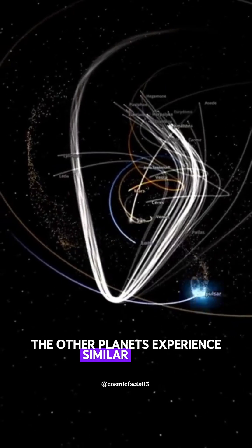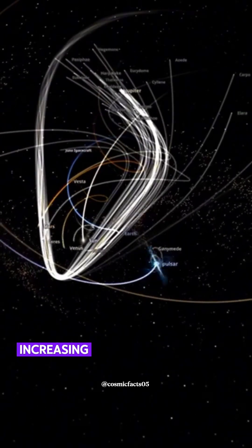The other planets experience similar chaos. Their orbits become erratic, increasing the risk of collisions.